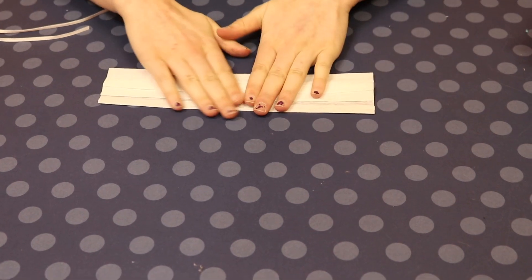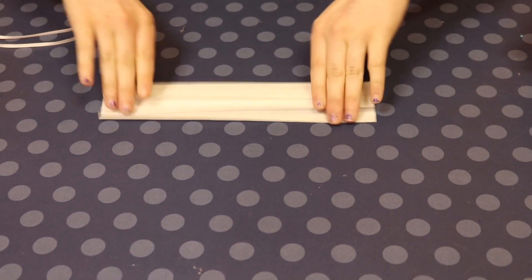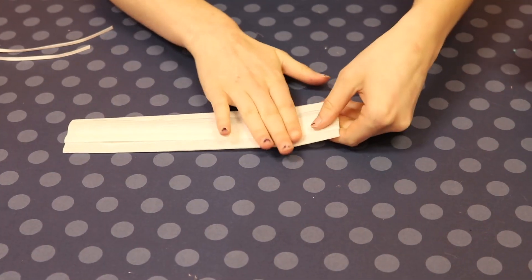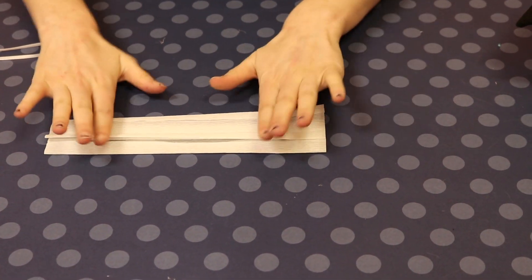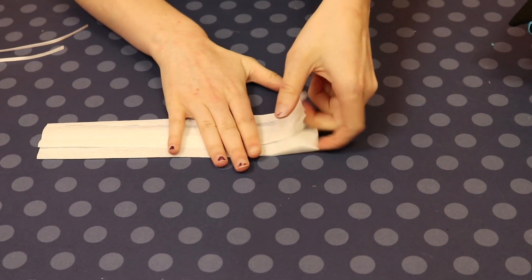We're going to press our mask down flat so the creases are secure, flip it over and fold the tabs in so we have a centerpiece about six inches long.